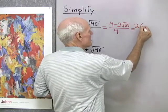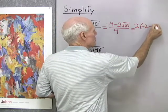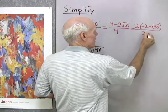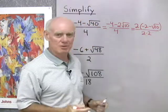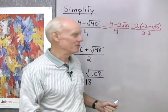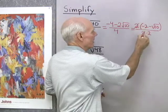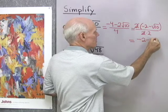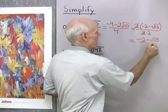So 2 times negative 2 minus square root 10 all divided by, let me just write 4 as 2 times 2, so you can see the common factor in the numerator and denominator. I'll divide that out, and what I have left is negative 2 minus square root 10 all divided by 2.